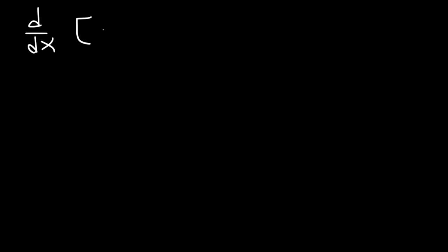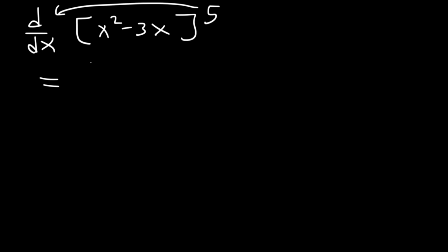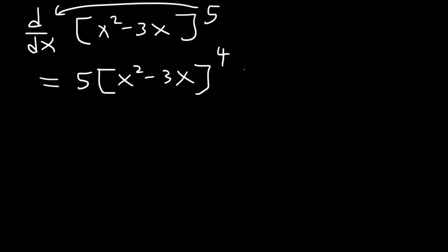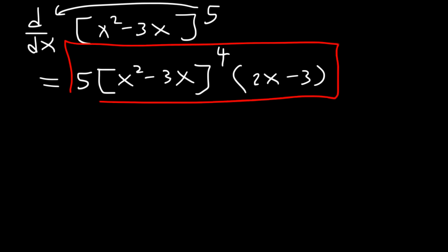Now let's work on some more examples. Find the derivative of x squared minus 3x raised to the 5th power. First, let's bring down the 5. Keep the inside function the same, and then subtract the exponent by 1, so this is 4. Then multiply by the derivative of the inside. The derivative of x squared minus 3x is 2x minus 3. And so that's the answer. Once you get used to the process, it's not that bad.